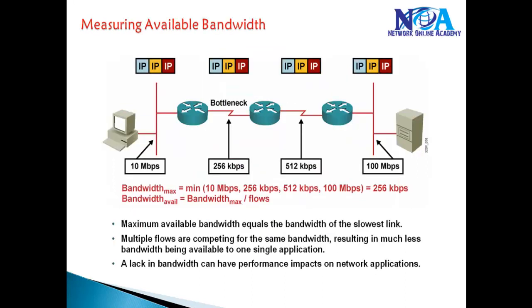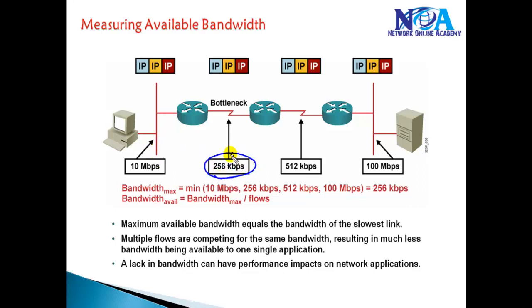In those scenarios we don't have enough bandwidth. The bottleneck will be the link supporting only 256 Kbps, and you cannot send information faster than that because the link connecting Router 1 and Router 2 can only support 256 Kbps.